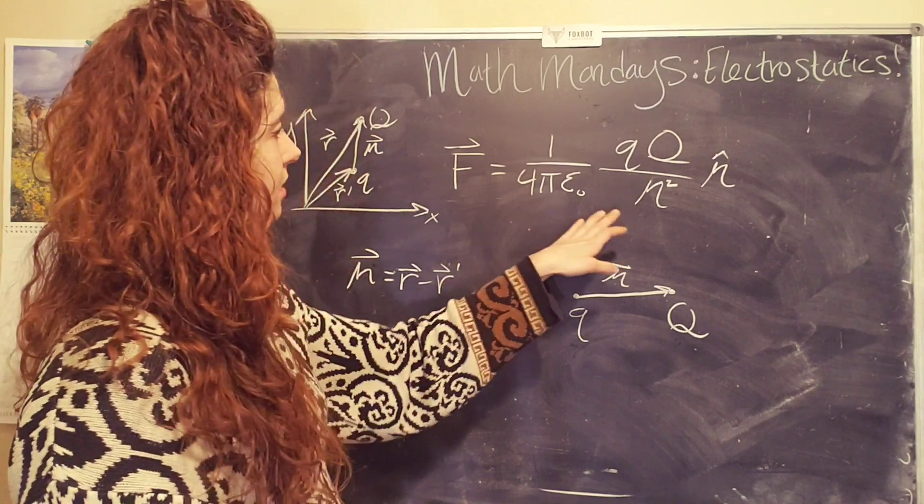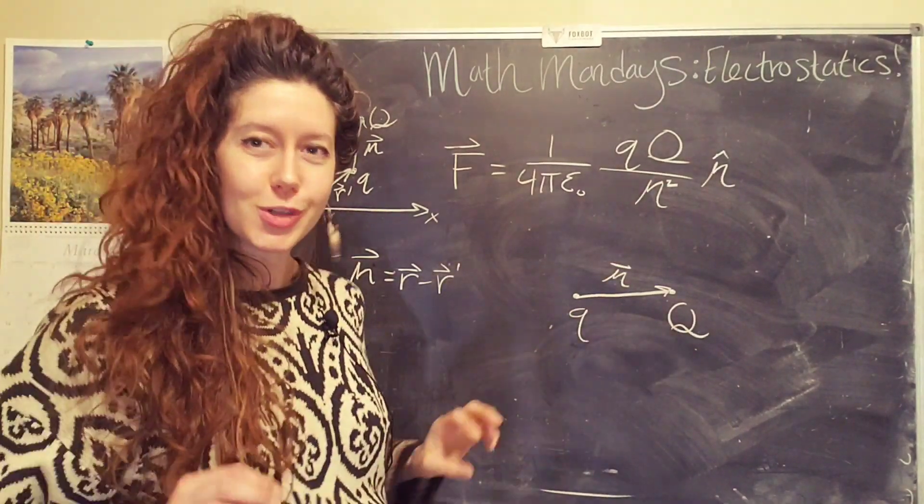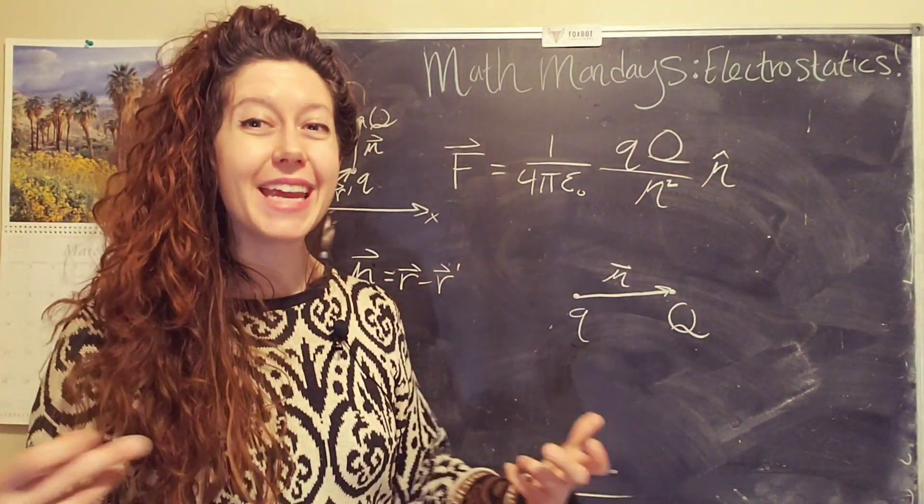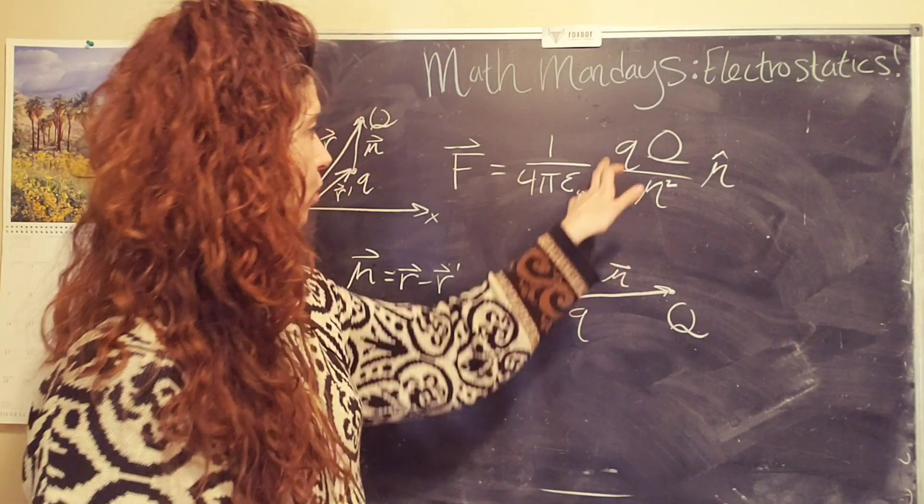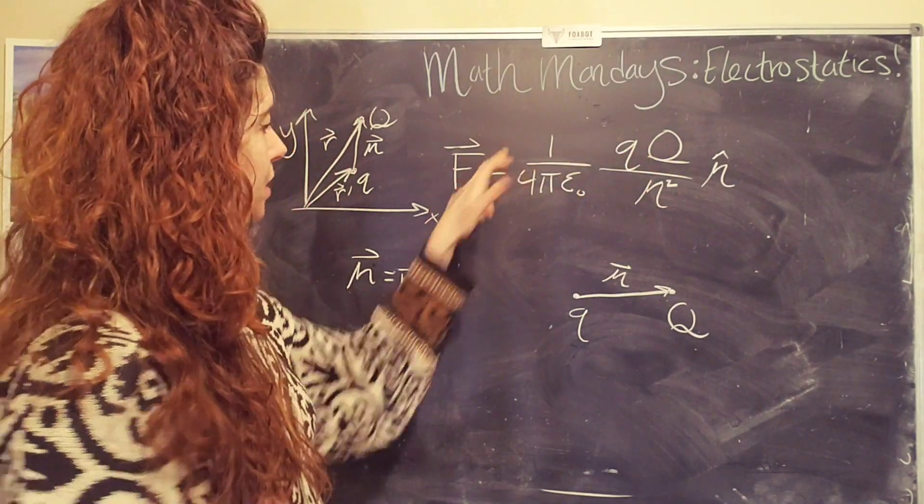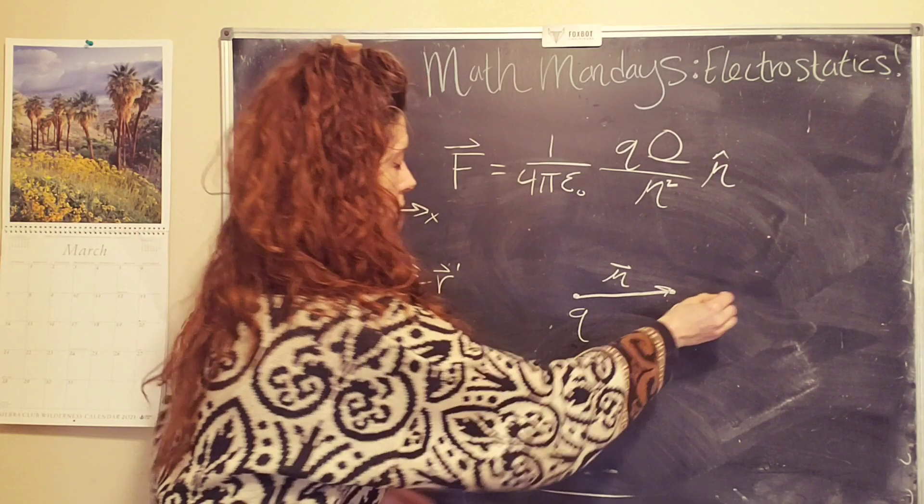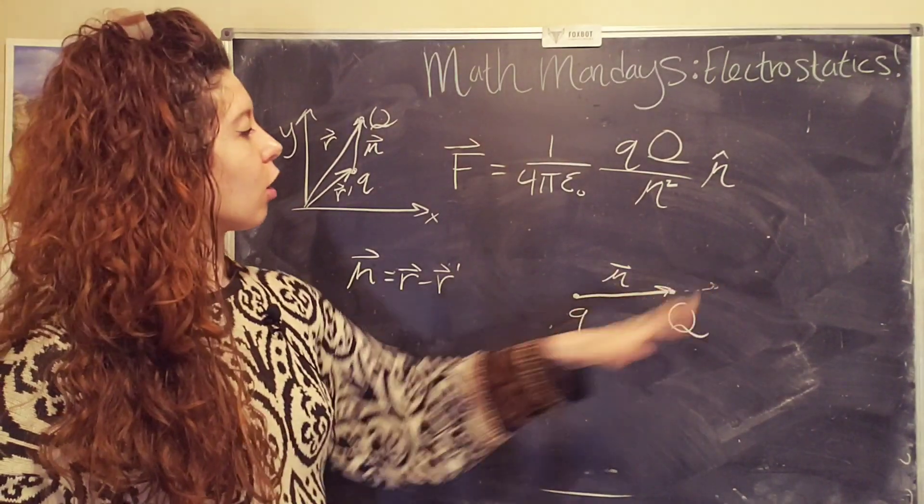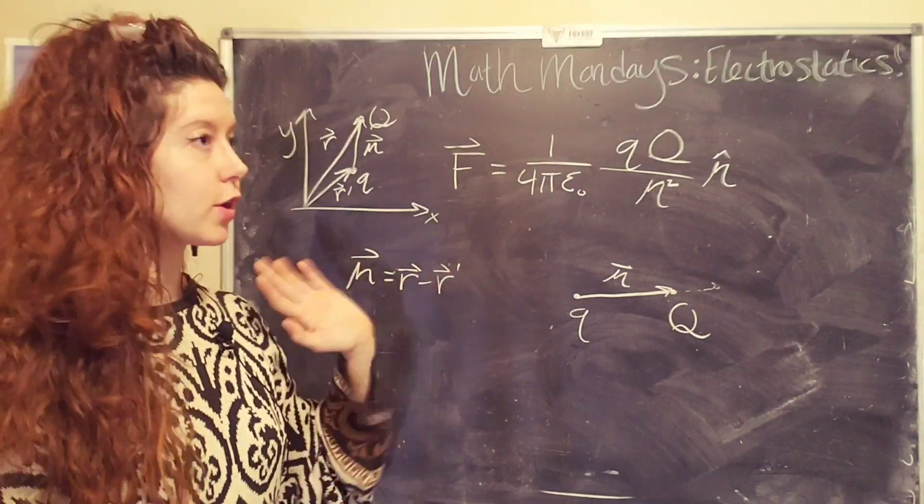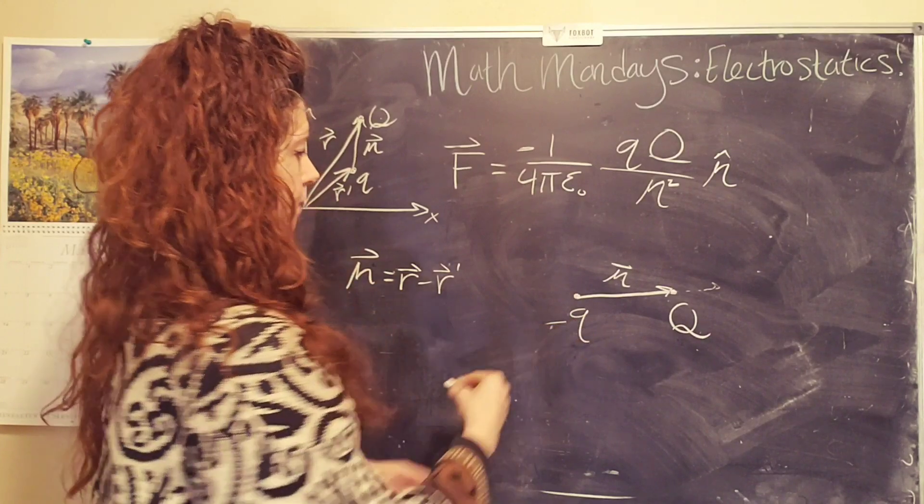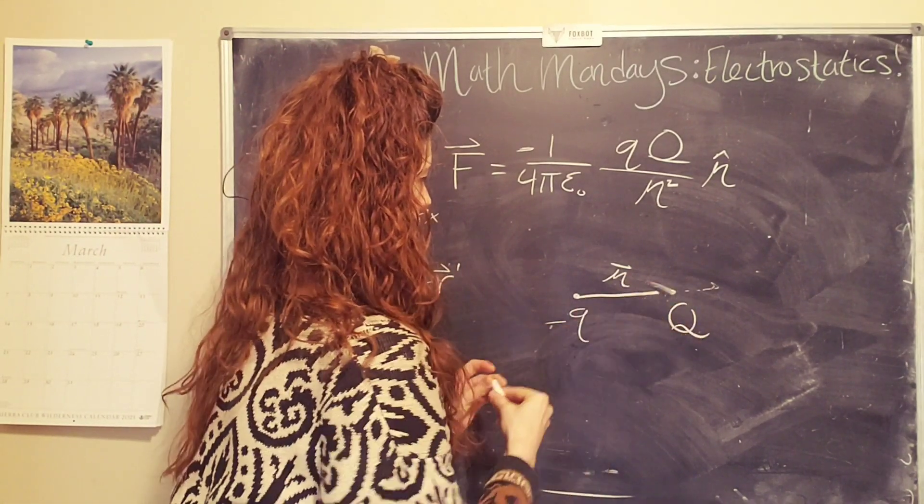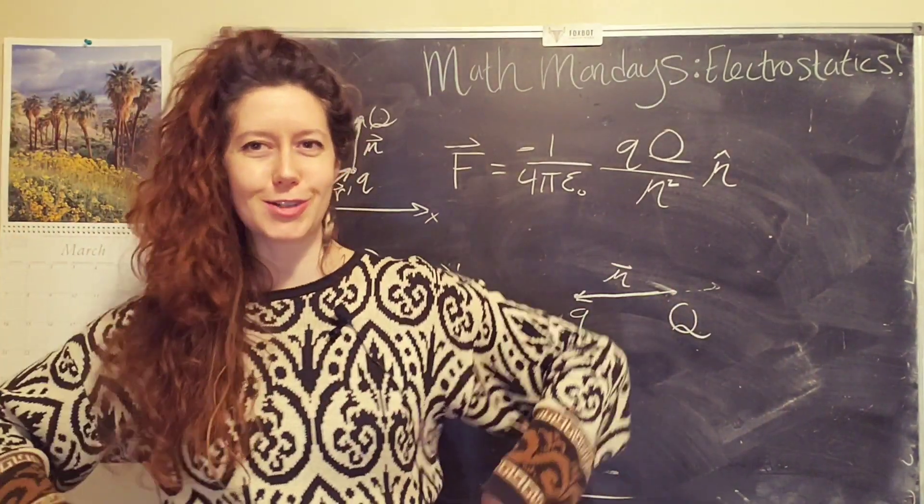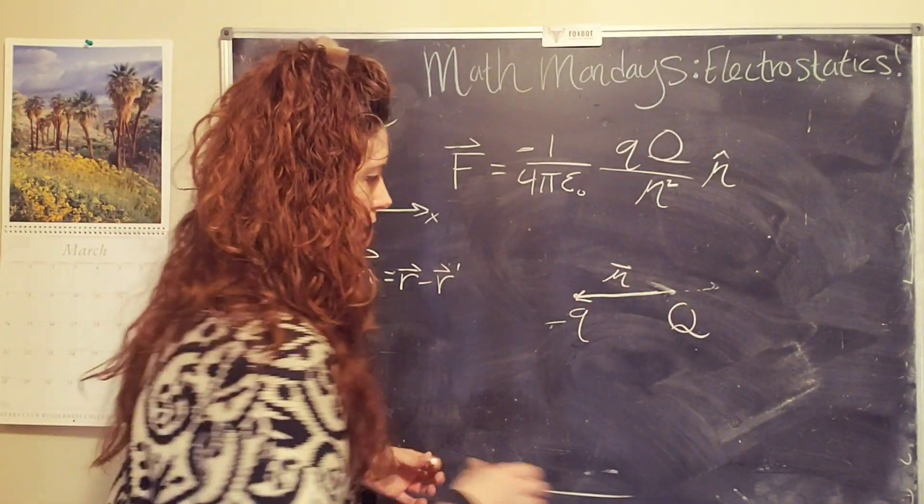So it's repulsive, meaning our test charge is going to go pew. It's going to be pushed away if our charges have the same sign. In other words, if they're both positive or they're both negative, the force will be positive. It will point outward. And this charge will be like, oh. If they are the same, sorry, if they're the opposite sign, then our force is going to be negative. It's like that. And the force will point from our test charge to our source charge. And it'll go, I am attracted to you. Very cool.